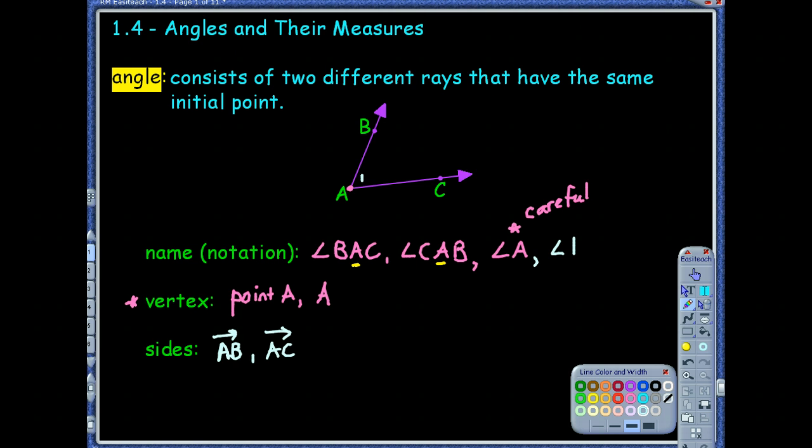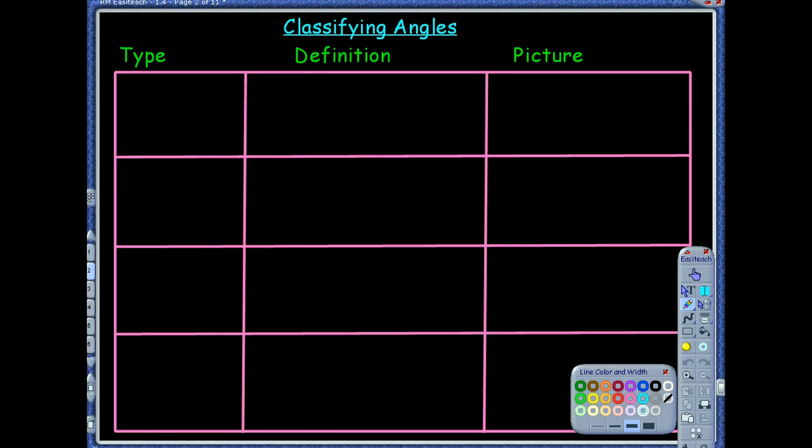Would these rays be opposite rays because they share the same initial point? No, because they don't form a straight line. They're not collinear. Good. Moving on.